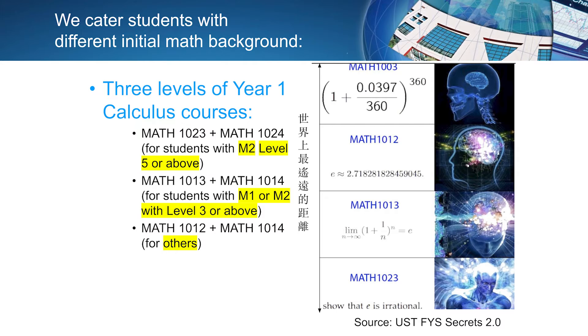The majority of students will take the middle level one, which is MATH 1013, and that is for students with M1 or M2, level 3 or above. If you haven't taken any M1 or M2 in high school, or your score is below level 3, we will assign you to another class called MATH 1012. In there, we have extra teaching hours that will go through some of the materials that you haven't learned in high school.